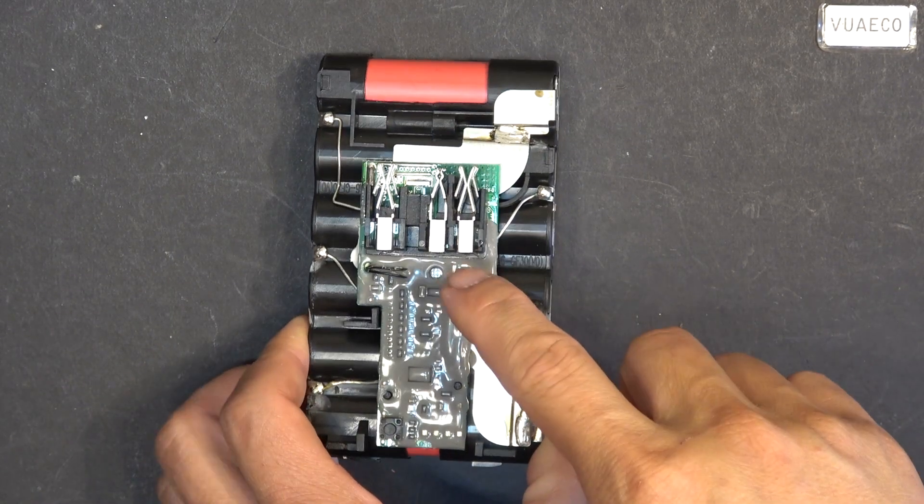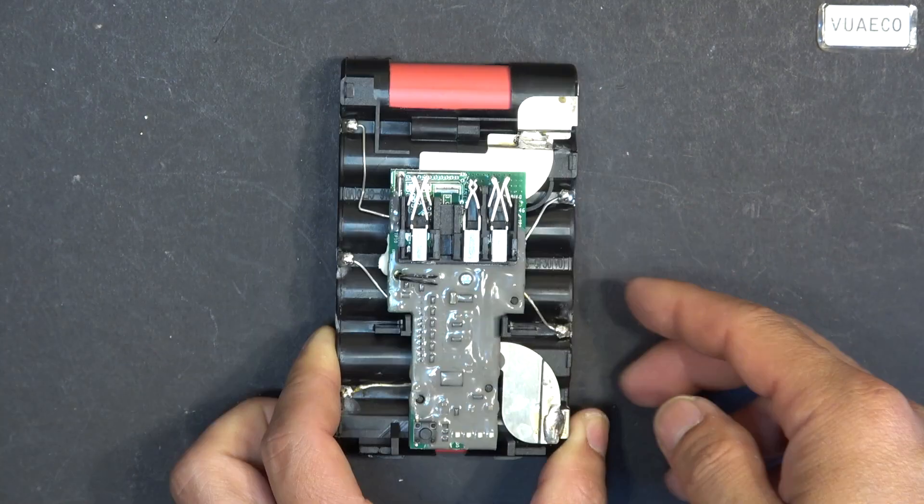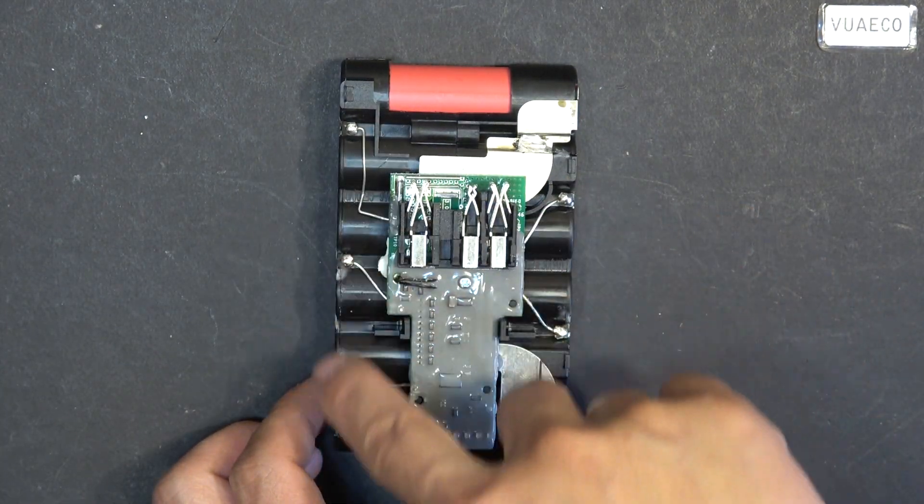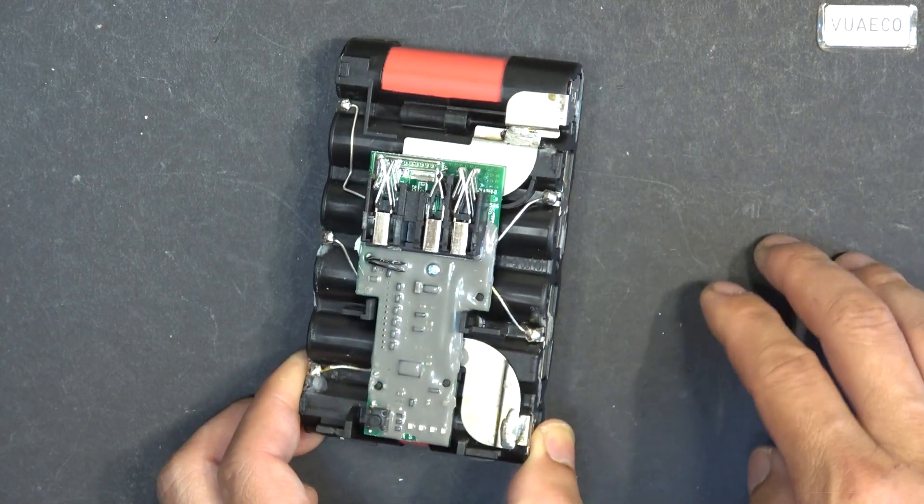So next, what I've got to do is remove the BMS board from this battery pack, it's 2Ah battery pack. And it's quite easy. It's got five balance cables and two main cables, so just have to desolder them.